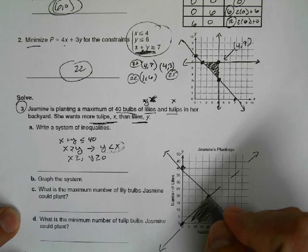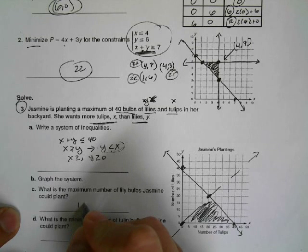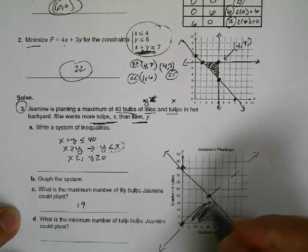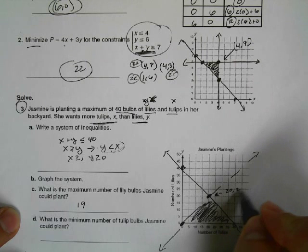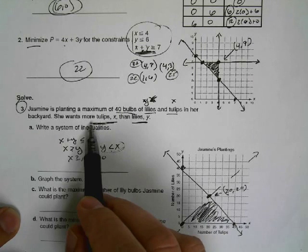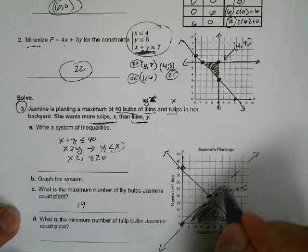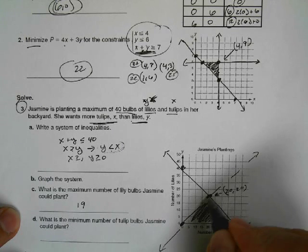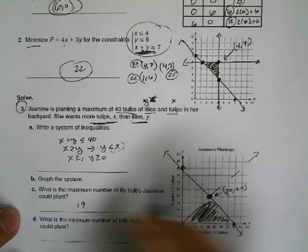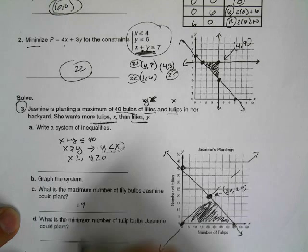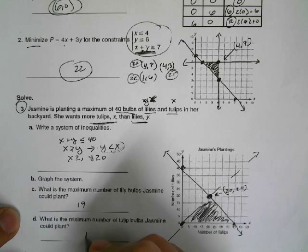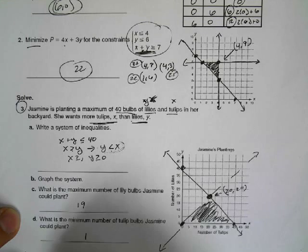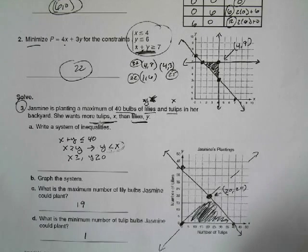The maximum number of lilies is 19. Now, you may say it's 20 because this point is 20, 20. But it says in the statement she wants more tulips than lilies. And because this line is a dash, I cannot have a point on this mark right here. What is the minimum number of tulip bulbs? Well, she wants more tulips than lilies. So technically we would say it's got to be 1. We can't have 0 because then she would have the same amount of lilies as tulips. There we go. Thank you.